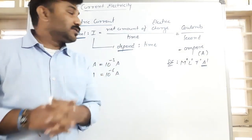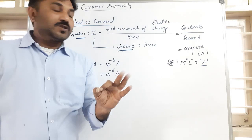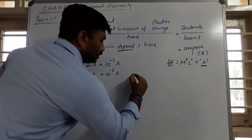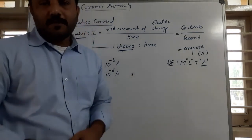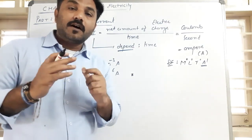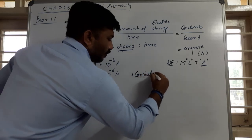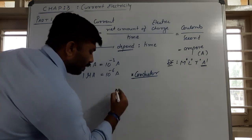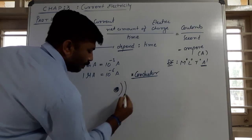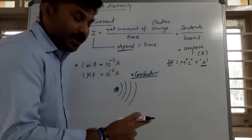In 10th standard we have seen electric current through the conductor; the same topic is here in 12th also. Inside the conductor, why does electric current flow? You know what a conductor is. A conductor is a material which consists of free electrons. Let us see. Suppose this is a conductor — this is the nucleus and these are the orbits in which electrons are revolving around the nucleus.